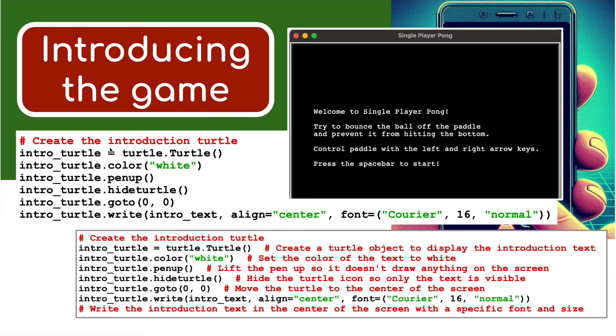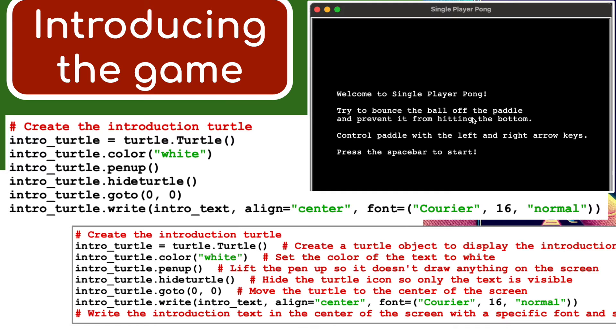In the next few lines 25 to 31 we're going to show you how to display this text onto the screen. We've got to create a turtle object to display the introductory text - intro_turtle = turtle.Turtle(). We're going to set the turtle to white so the text is going to be white. Lift the pen up so it doesn't draw anything on the screen. Hide the turtle icon - we don't want a turtle appearing or an arrow. And move the turtle to zero zero - basically the center of the screen.